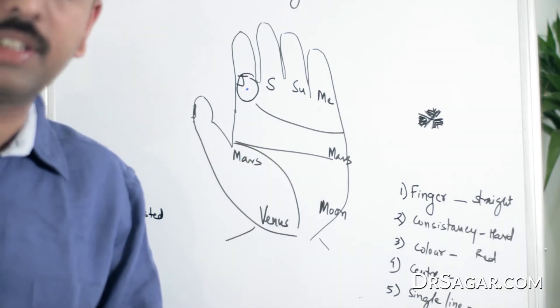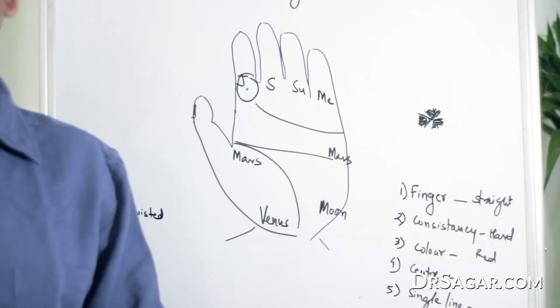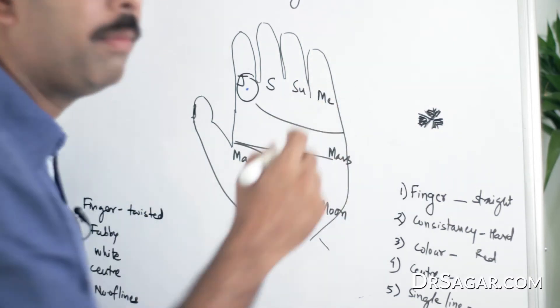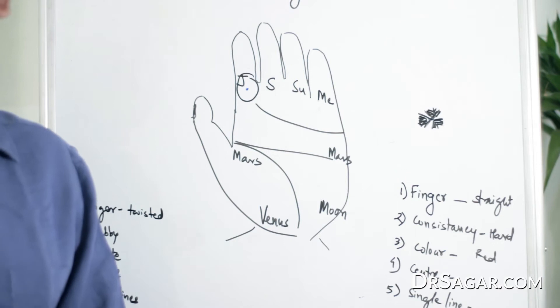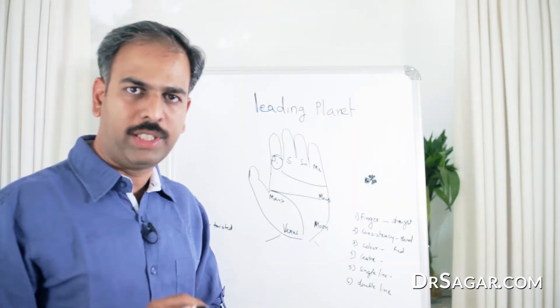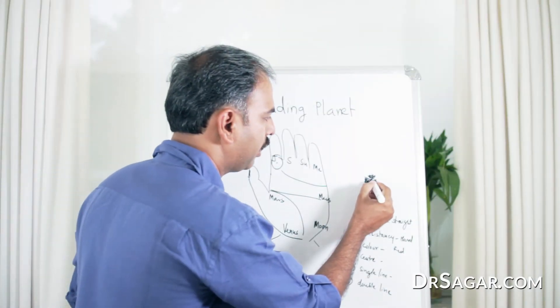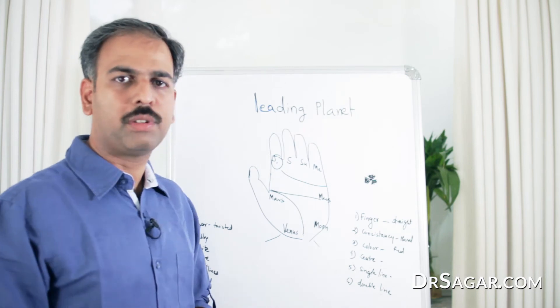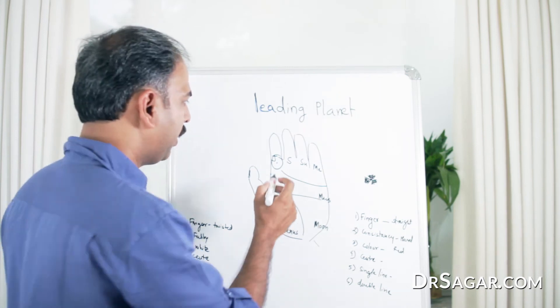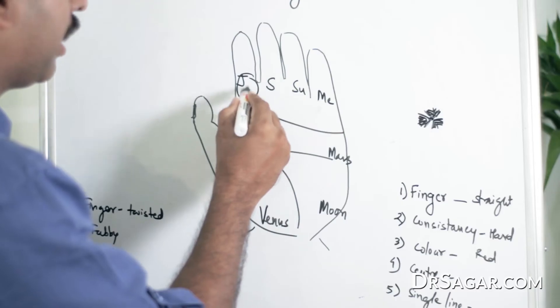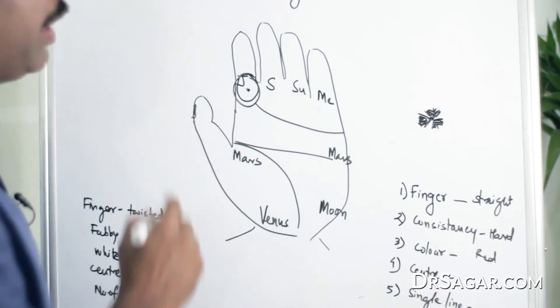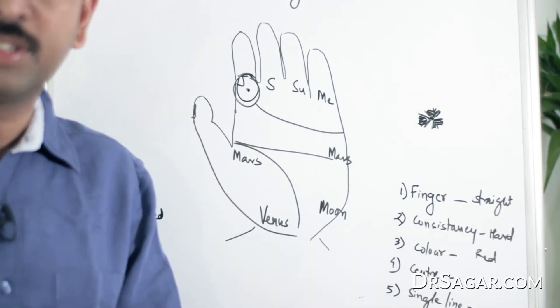We call it as skin capillaries. So, with the magnifying lens and with practice, you can find the center point. The importance of the center point is, if it is present in the center of the area of the planet, the characteristics of the planet are increased, and it becomes a leading planet.